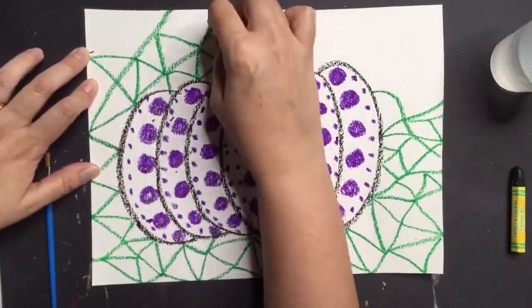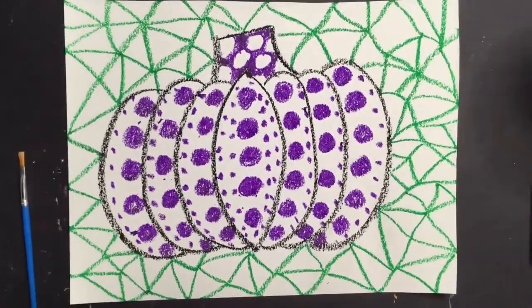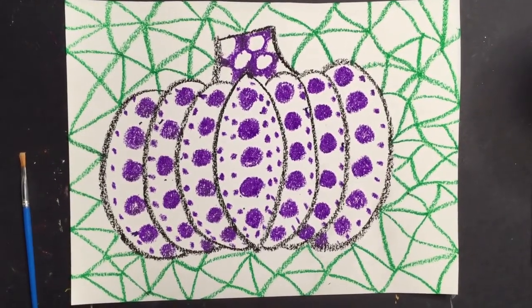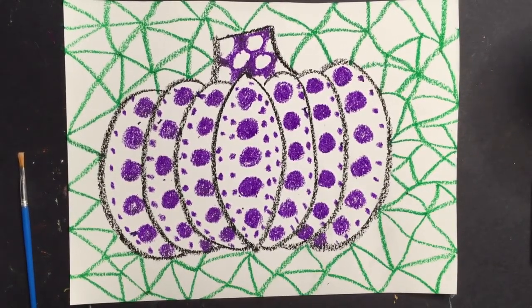Look at that. And last, add whatever color you want to the rest of your art. I'm going to paint my background red and my pumpkin yellow.